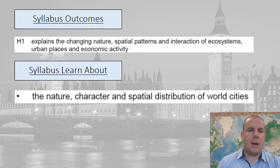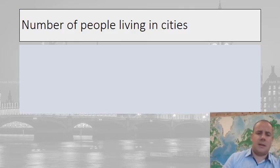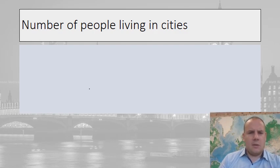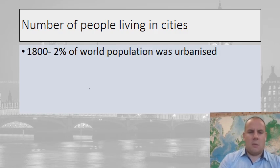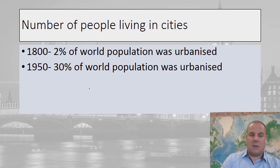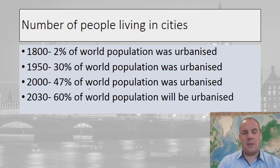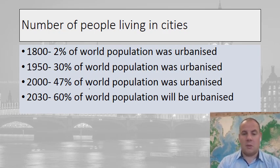Let's look at the number of people living in cities. In 1800, only 2% of the world's population was urbanized. By 1950, that rose to 30%, and in 2000 it was 47%. It's estimated that by 2030, 60% of the world's population will be urbanized — a really big shift of people moving from the countryside to cities.